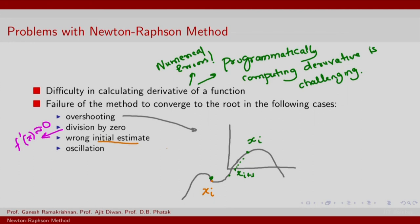This is an example of wrong initial estimate. And finally, one might oscillate. You might have an x_i which is reasonably initialized somewhere here, but it is possible that you oscillate between two iterates on either side of the x-axis.